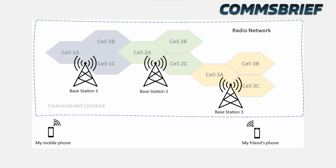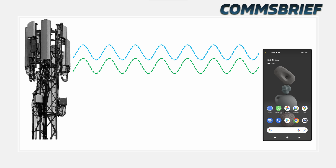These frequencies are very expensive — they are licensed frequencies that mobile operators have to purchase from the regulatory authorities in your country. The frequencies used by mobile phones are part of a large frequency spectrum operational in a certain country. In the UK, for example, the authority that mobile operators purchase the frequencies from is called Ofcom.